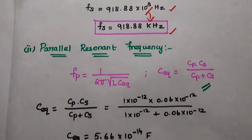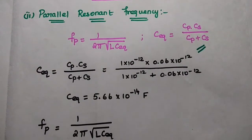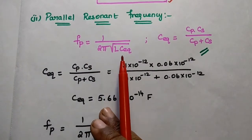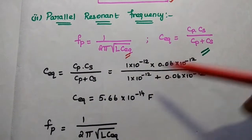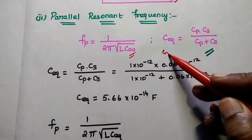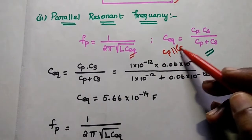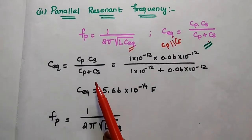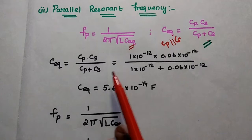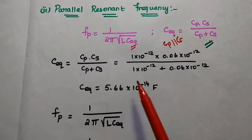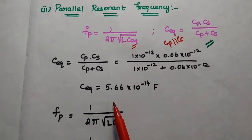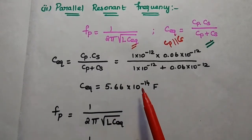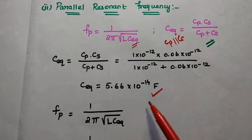Next we find the parallel resonant frequency. The formula is Fp = 1 by 2π√(L × C_equivalent), where C_equivalent is the parallel combination of Cp and Cs. So we first find C_equivalent using the formula: (Cp × Cs) divided by (Cp + Cs). Substituting and simplifying the values, we get C_equivalent = 5.66 × 10⁻¹⁴ farad.